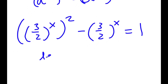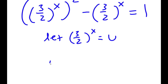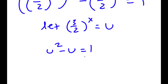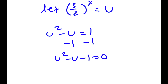Now I'm going to let 3 over 2 to the power of x equal the variable u. So now I have u squared minus u is equal to 1. Subtracting 1 from both sides gives u squared minus u minus 1 is equal to 0.